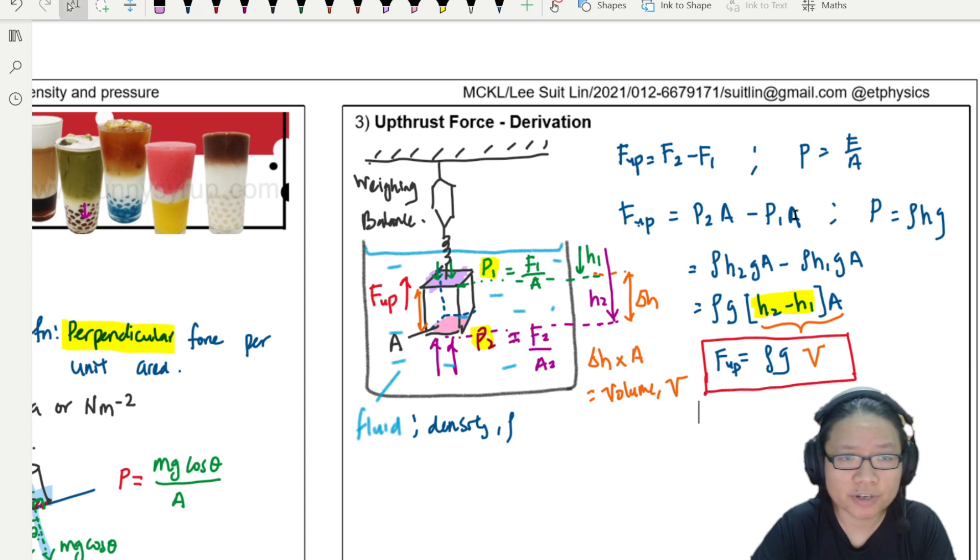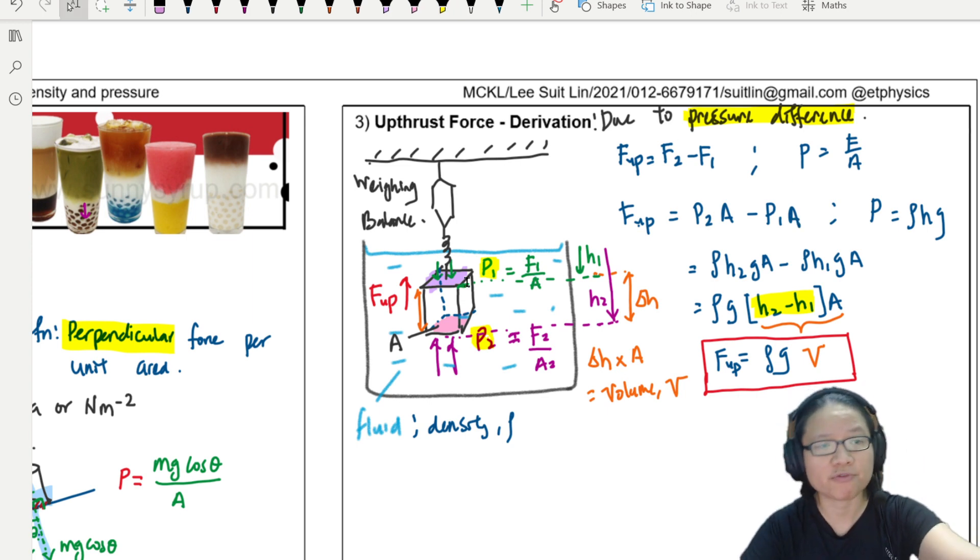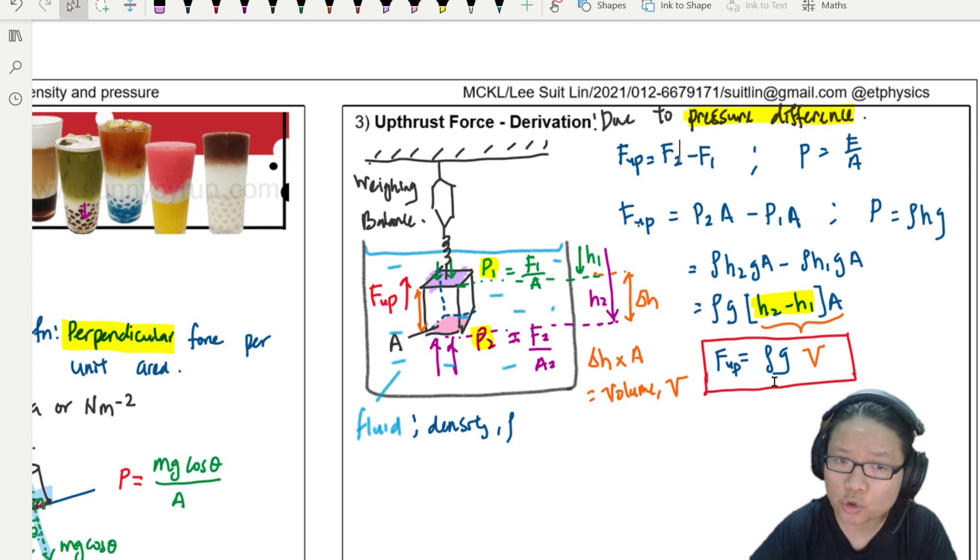Do you need to know this derivation? Yes. You also need to know that the uptrust force is due to, start with this, due to pressure difference. So whenever you don't know, or they ask you a statement question in paper 1, please understand that uptrust is due to this pressure difference. So the difference between P1 and P2. And because of this pressure difference, we will have a force difference. And if we subtract the force difference and use the pressure relationship, we can then naturally come up with a familiar equation rho GV.